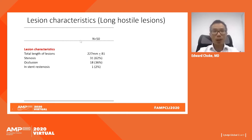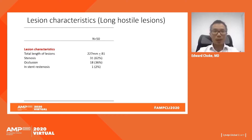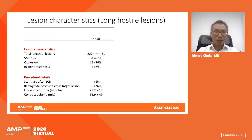Most lesions were long and hostile. The mean lesion length was approximately 227 millimeters. About a third were completely occluded, 8% required stent use, and approximately one quarter required retrograde access to cross the target lesion.